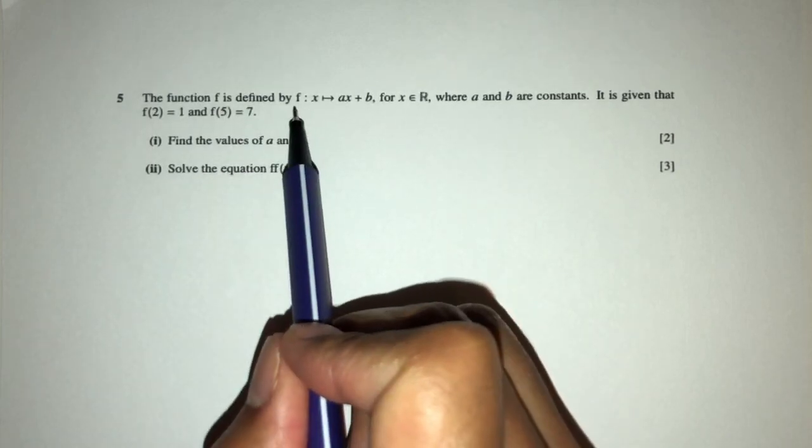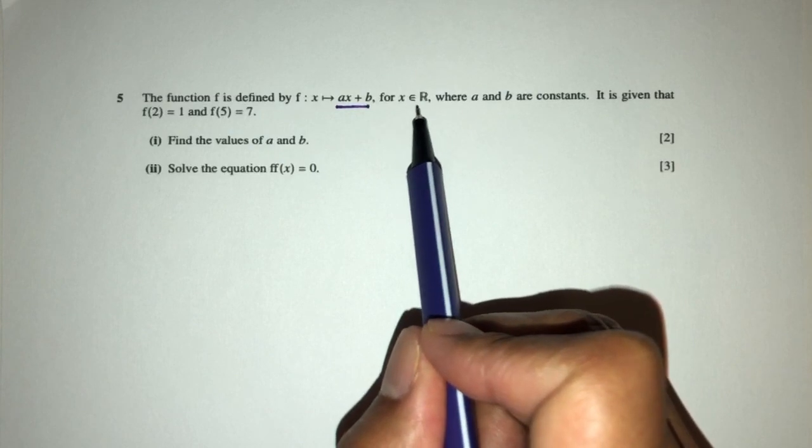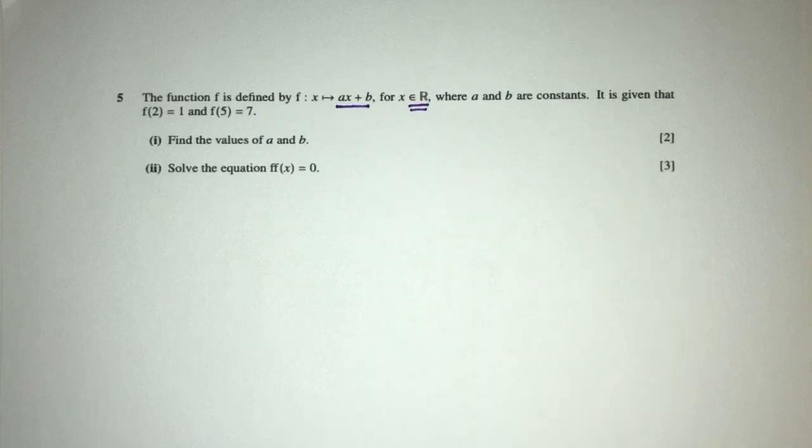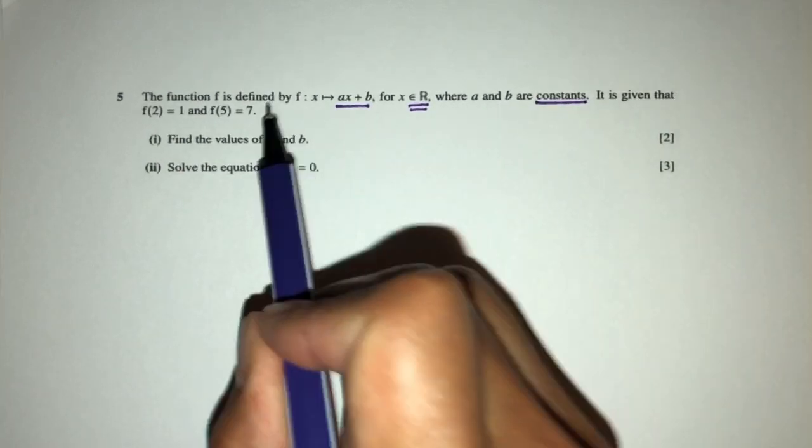Now we have the function f defined by f(x) equal to ax plus b. x can be any real value, so x can take any values for this function. Now a and b are constants, that we can see here, a and b.